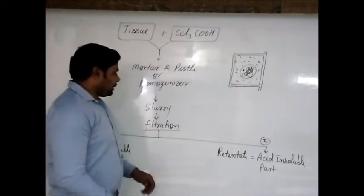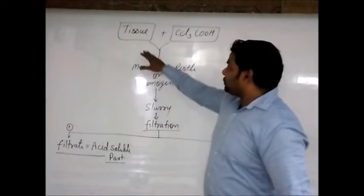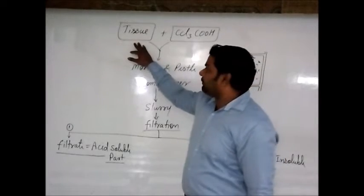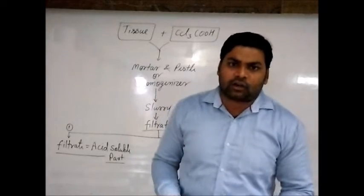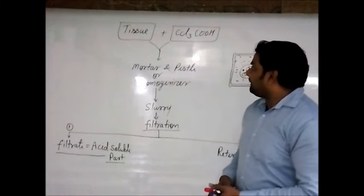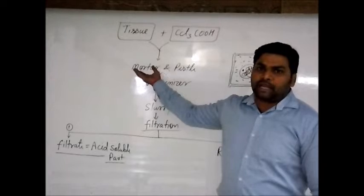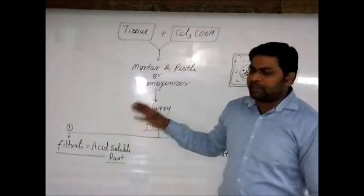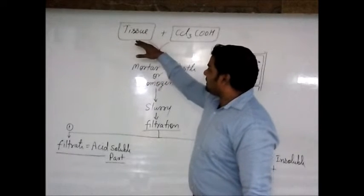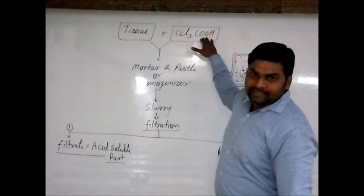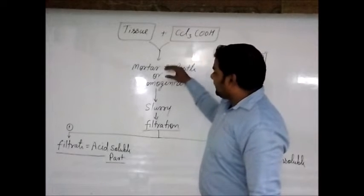So to extract biomolecules, the simple procedure is: we take tissues, either plant or animal tissue. For example, for animal tissue you can take liver tissue of goat, rabbit, or whatever is available. For plant tissue extraction you can take any kind of plant tissue like spinach leaf, pea grains, or whatever is available. Whatever living tissue you are getting for this extraction, just add trichloroacetic acid.